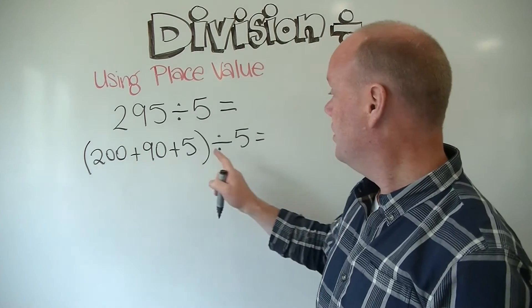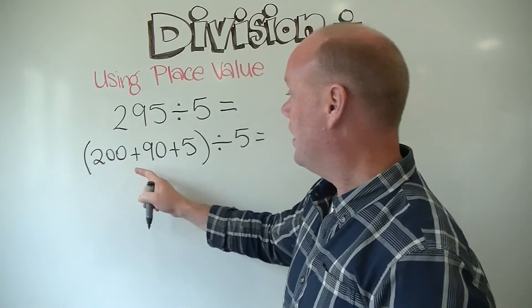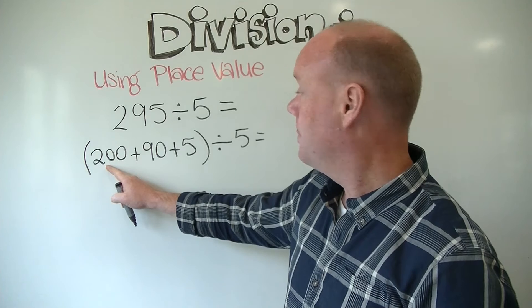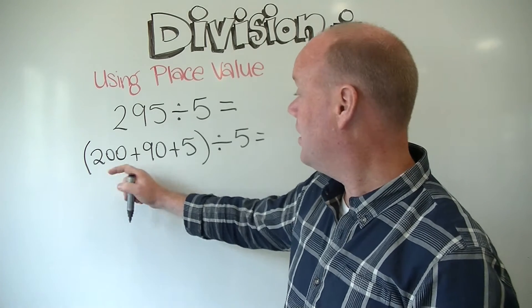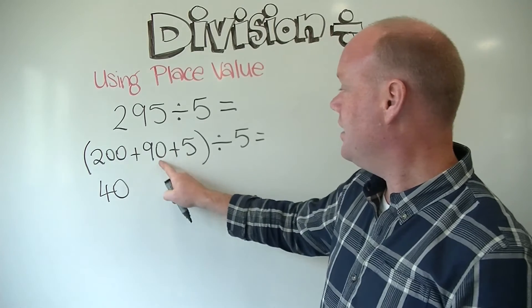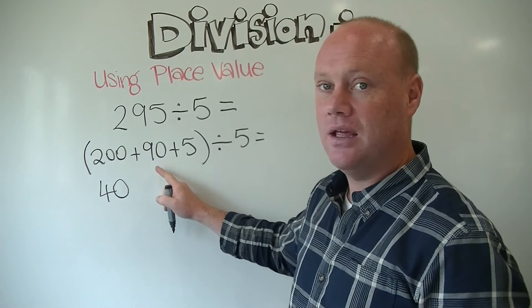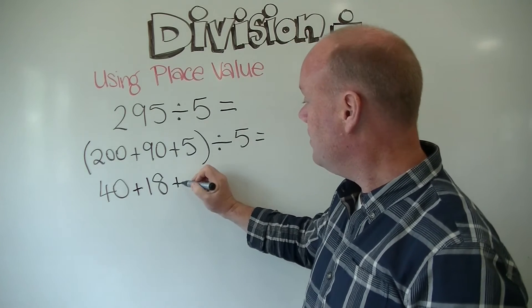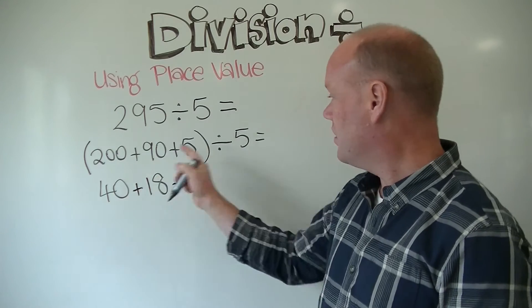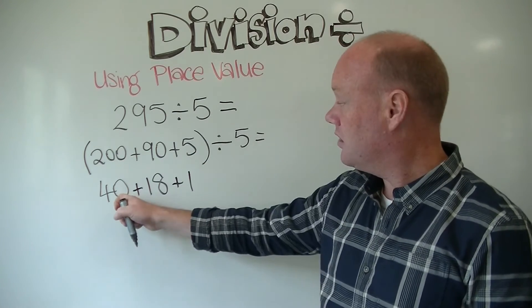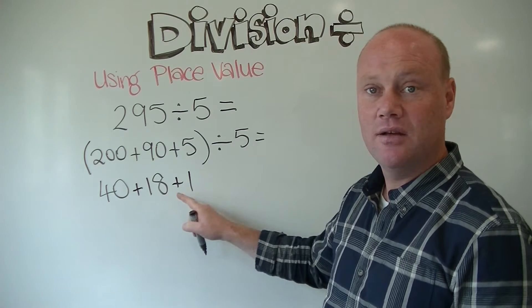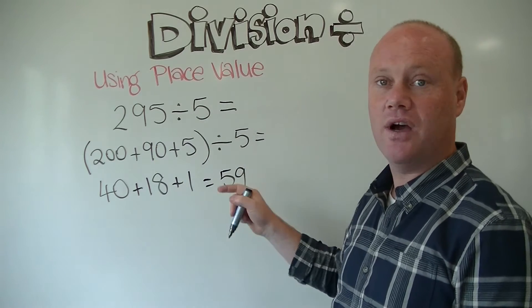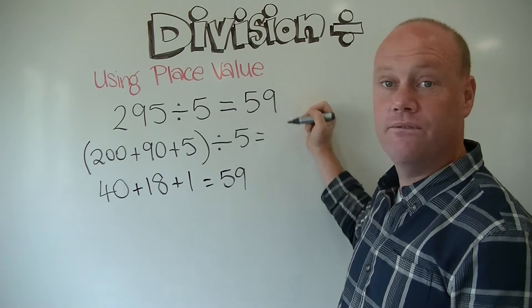I can solve 200 divided by 5 using my knowledge of multiplication and powers of 10. I know that 20 divided by 5 is 4, so 200 divided by 5 is 40. Then 90 divided by 5 is 18, and 5 divided by 5 is 1. Now I put them all back together: 40 plus 18 plus 1 is 59. So the answer to 295 divided by 5 is 59.